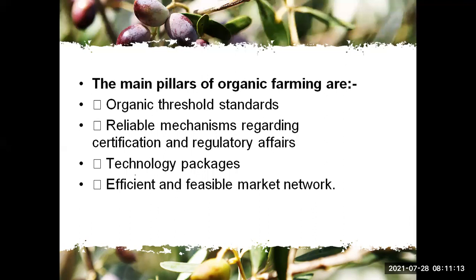Next is the main pillars of organic farming. Number one is organic threshold standard. Number two is the label mechanism regarding certification and regulatory affairs. Number three is technology packages. Number four is an efficient and feasible market network. These four are the organic farming pillars.